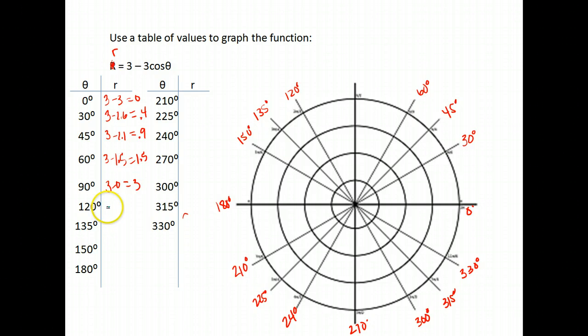120 so you're going to notice some of these values they're going to start repeating because we know that cosine is the same in this quadrant just negative numbers. So here the cosine of 120 is negative 0.5, take that times negative 3 and I get positive 1.5 so here I get 3 plus 1.5 or 4.5. 135, cosine of 135 is negative 0.7, if I type that times negative 3 I get 2.1 so I get 3 plus 2.1 or 5.1.